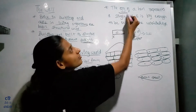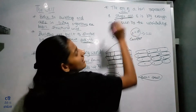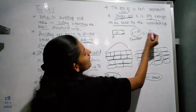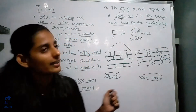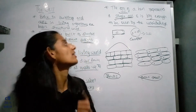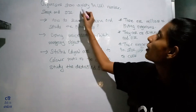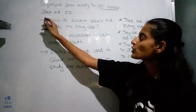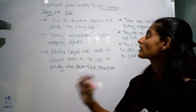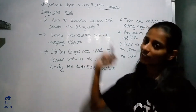A single egg is a single cell that is big enough to see with the unaided eye. Organisms show variety in cell number, shape and size. Different organisms have cells of different shapes and sizes.